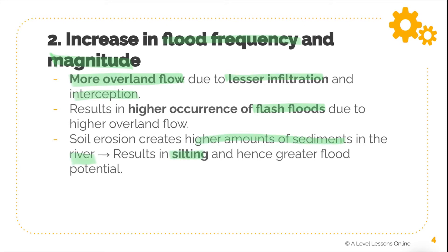Soil erosion creates high amounts of sediments in the river, resulting in silting. Silting can also cause greater flood potential — think about a bucket of water that is completely empty versus one where you throw in a bunch of rocks and dirt. The bucket with greater mass and materials is bound to overflow more easily. Likewise, silting will actually increase the chances of flooding in nearby rivers.